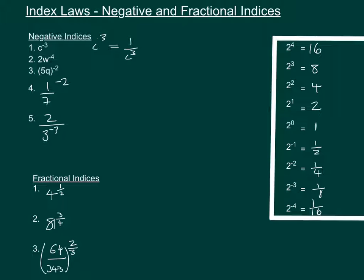The next one is slightly different in that we've got 2w to the minus 4. The only thing that's to the power of minus 4 is the w, so we're going to have 2 times 1 over w to the power of 4, which gives us 2 over w to the power of 4.